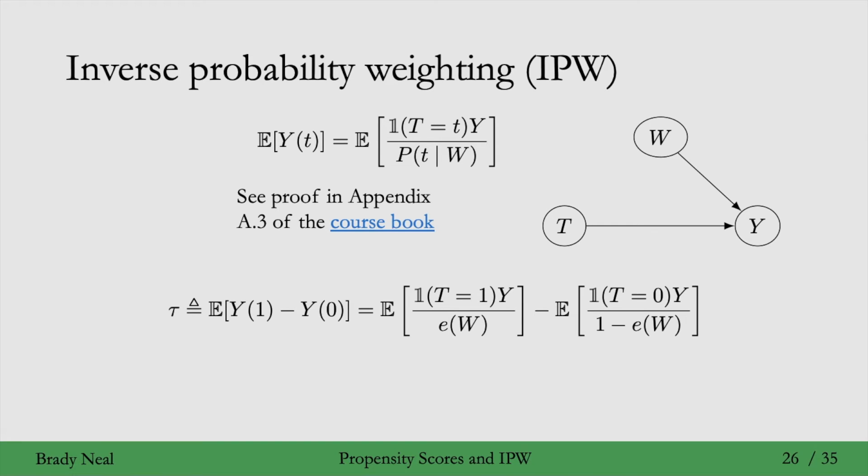We'll now write down the ATE, taking the above equation and plugging in T equals 1 and T equals 0. We're now going to use propensity score notation. Here we have 1 minus the propensity score, because remember, propensity score is probability of T equals 1, not probability of T equals 0.